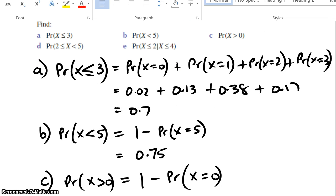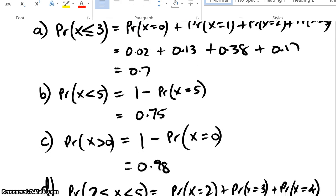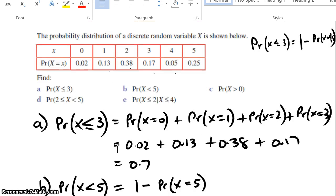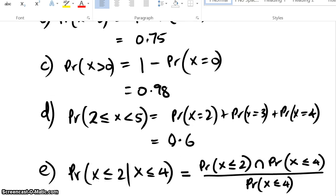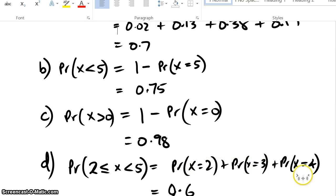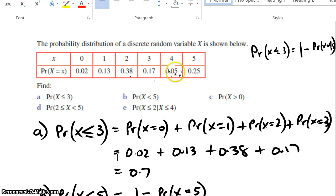With the next question I've got the probability that x is greater than zero. Two ways of doing that - I could just find out what one, two, three, four, and five are, the probability of all those happening, or I could do one minus the probability that x equals zero. If I do that, I end up getting one minus 0.02, which ends up being 0.98. The next question I want to know the probability that it's greater than two and equal to two, but less than five - so two, three, or four. And that's exactly what I do. I find out the probability of x equals two, add it with three, add it with four, and I end up getting 0.6 if you add all of those ones up together.